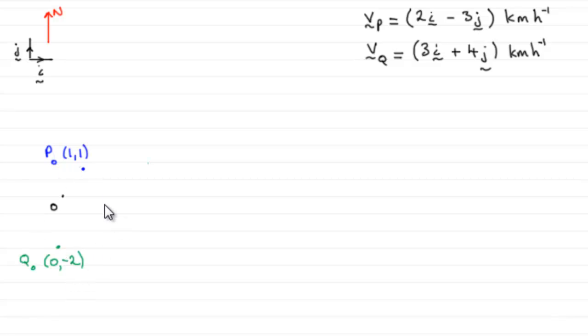Okay, so with that marked on, let's mark on the velocity vectors for P and Q. So, if we start with P, the velocity of P is going to be a vector like this, 2i minus 3j. And for Q, we've got 3i plus 4j.